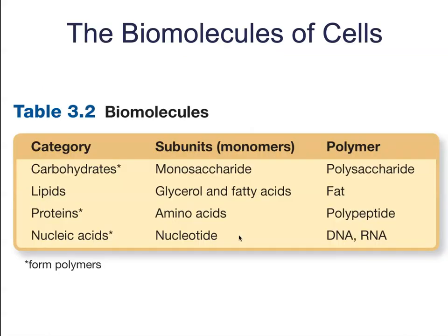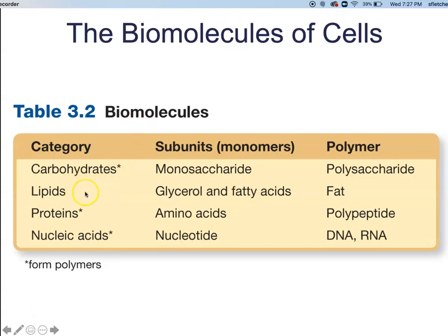Our next unit is going to cover the biomolecules of cells. We're going to break those into four categories: carbohydrates, lipids, proteins, and nucleic acids. Most of the biomolecules we are familiar with in these four categories are going to be what are known as macromolecules.